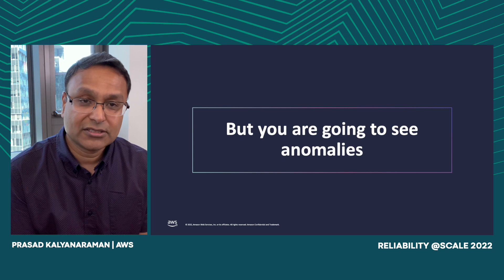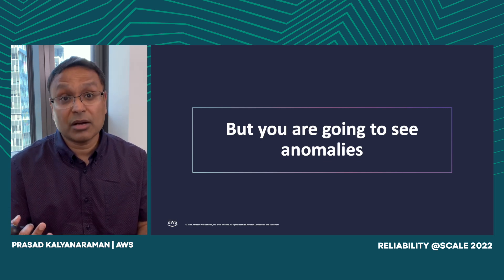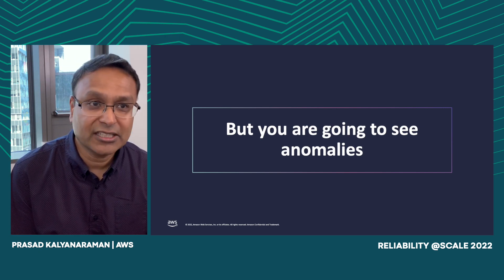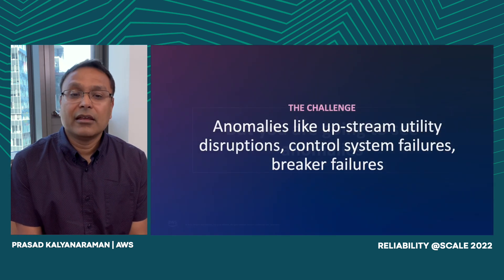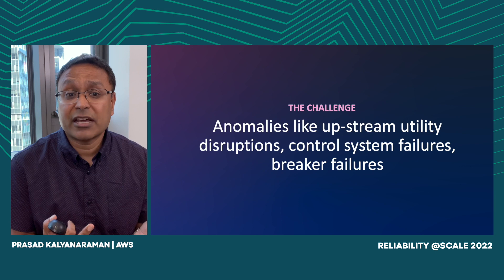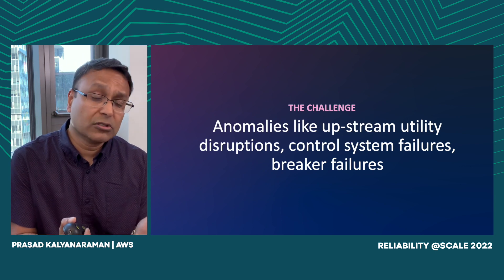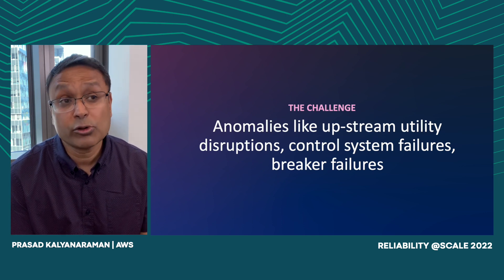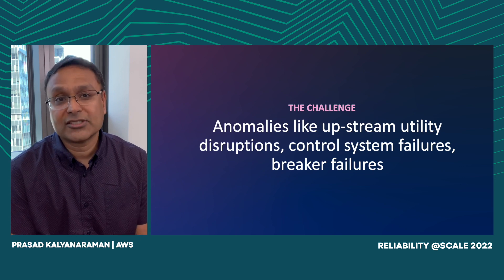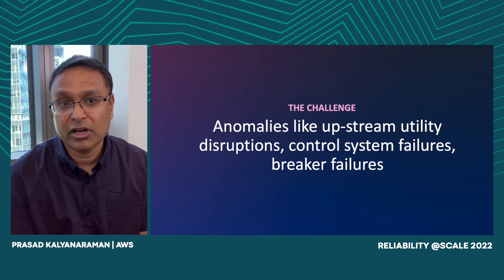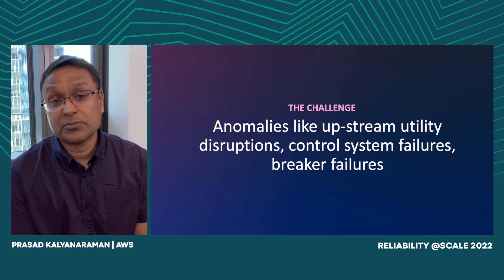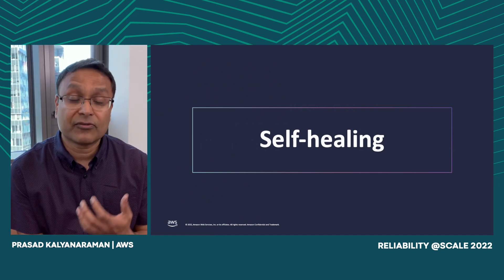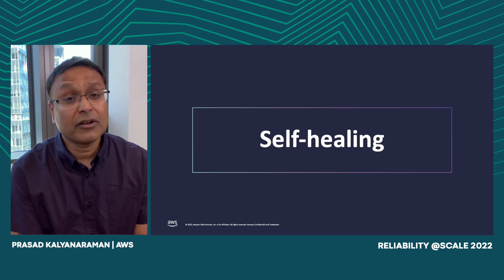You're going to see anomalies in your production environment. You can design for many of them, but at some point you'll be caught by an anomaly you've never seen before. These can include upstream utility disruptions with unusual power signatures, control system failures, breaker maintenance failures, and oversubscription events when servers consume a lot of power on single lineups. We've built self-healing systems to recover from these anomalies automatically, and that has paid significant dividends.